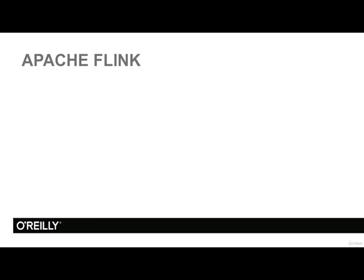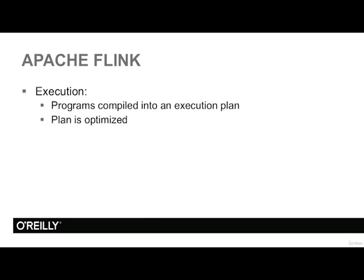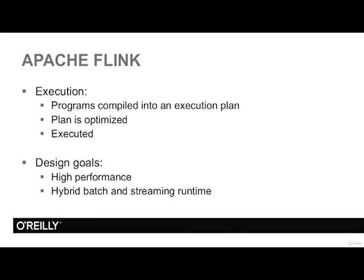Apache Flink is a new system in the Apache Hadoop ecosystem. One interesting feature is that programs are compiled into plans, which are then optimized and executed. If you come from a relational database background, you will recognize this — relational databases have access path builders and query optimizers, and now we are gaining these benefits in Hadoop and big data systems. Flink is a result of a European research project with goals of very high performance, unification of batch and streaming into a hybrid runtime, and simplicity for the developer.